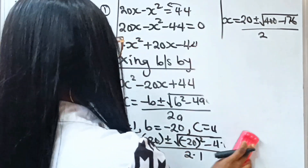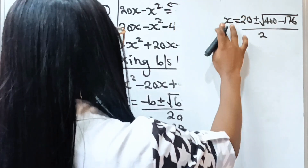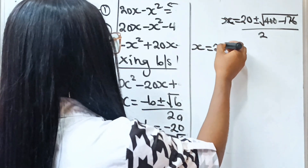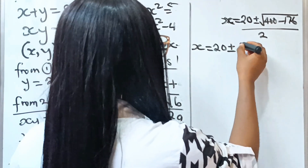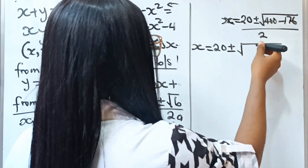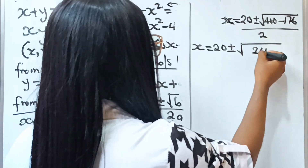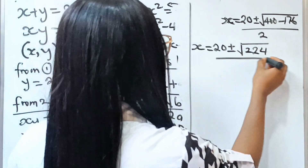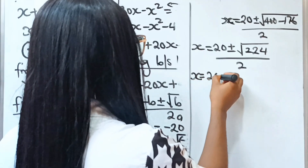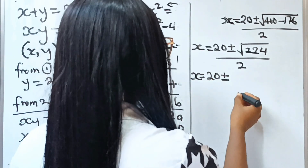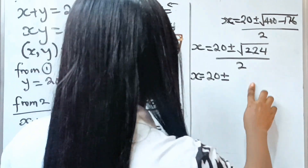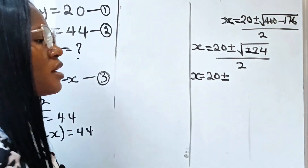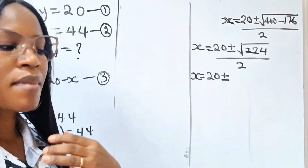So x is equal to 20 plus or minus the square root of — now 400 minus 176: 10 minus 6 is 4, 9 minus 7 is 2, 3 minus 1 is 2 — so we have 224, divided by 2. Now let's simplify the square root of 224, since we are not asked to use a calculator.